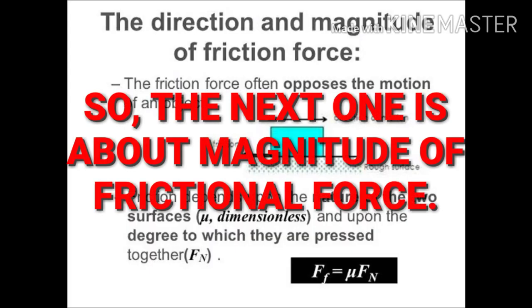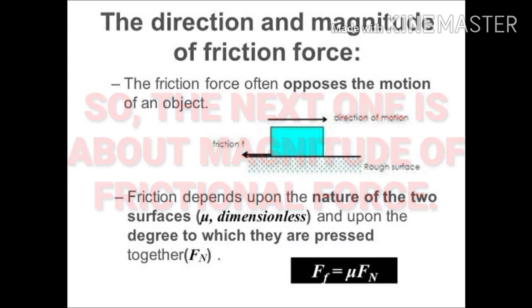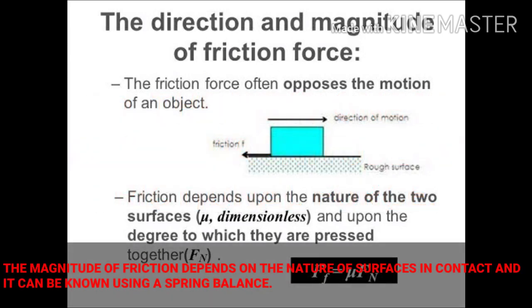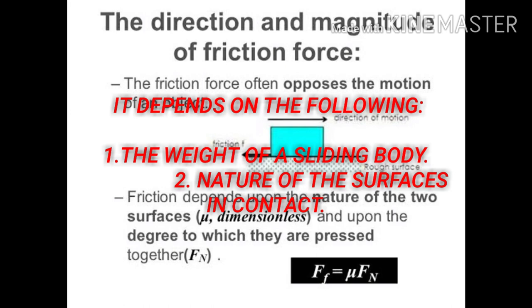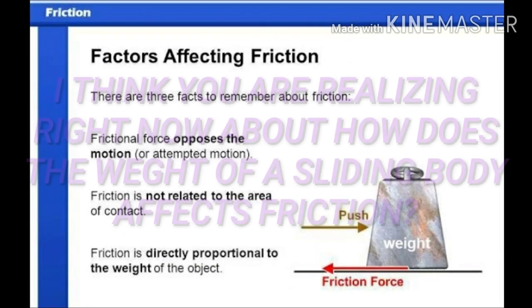The next topic is about the magnitude of frictional force. The magnitude of friction depends on the nature of the surfaces in contact, and it can be measured using a spring balance. It depends on: number one, the weight of the sliding body, and number two, the nature of the surfaces in contact.